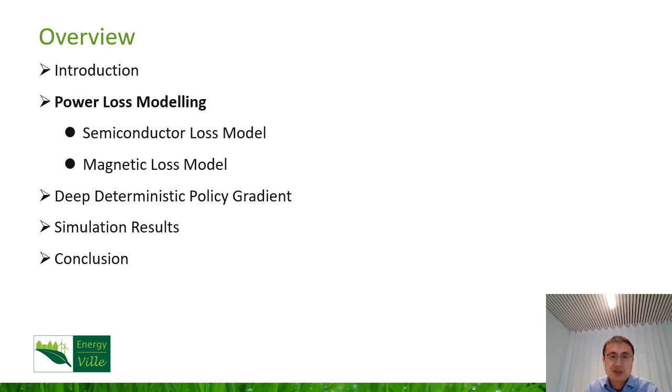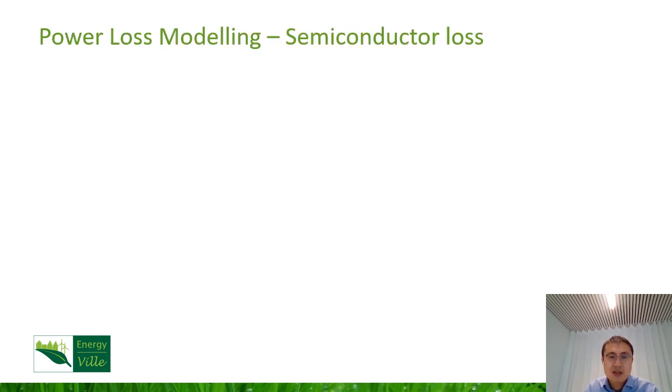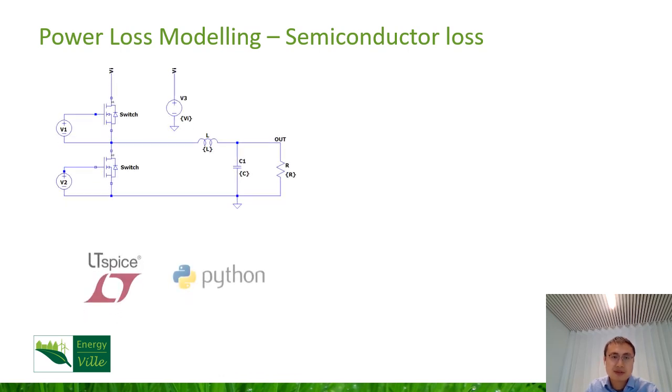Next, I will introduce the power loss models, including the semiconductor loss and magnetic loss. Due to the non-linear properties of power loss modeling, especially on switching losses, mathematic methods do not always work well. So we use SPICE simulation to calculate the switching losses, which can provide precise information about the circuit's dynamic properties. Python programming is used to control the SPICE simulation to change in different scenarios.